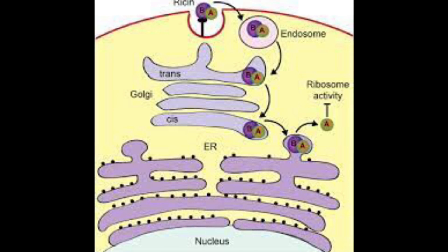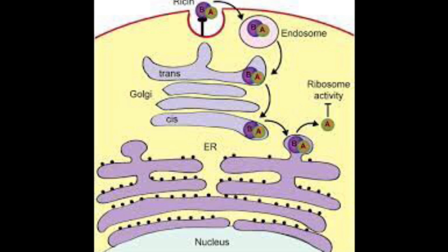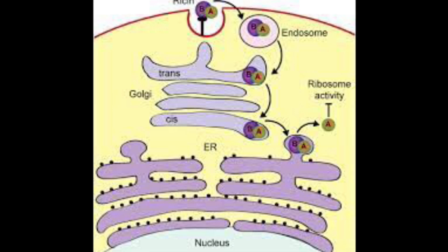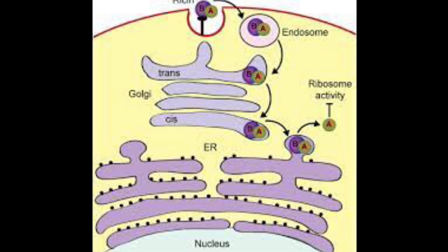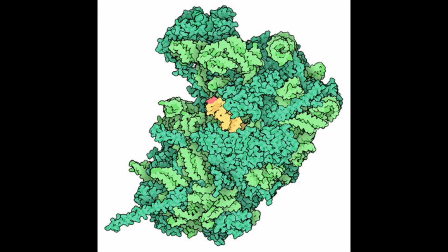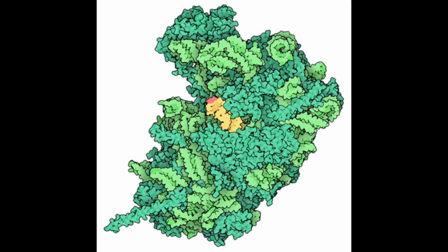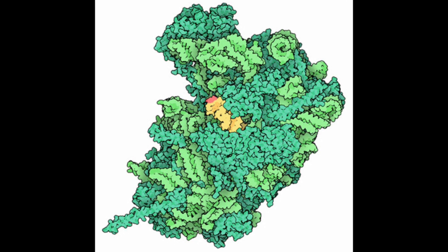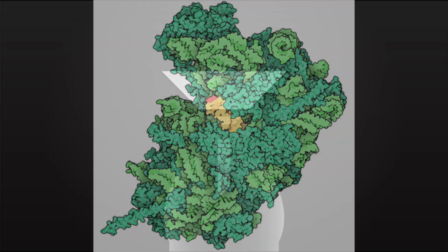While most ricin molecules fail to reach the cell's cytoplasm, even a single sufficient entry is all it needs to be successful. Once the linkage between the chains is broken and the A chain is allowed to travel, it inactivates ribosomes at an astonishing rate of 1,500 per minute, eventually leading to cell death.